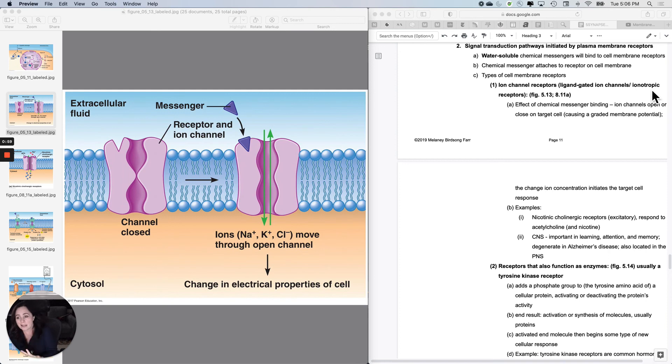So the effect of the chemical messenger binding is going to be that an ion channel opens or closes on the target cell, causes a graded membrane potential, could be depolarizing or hyperpolarizing.